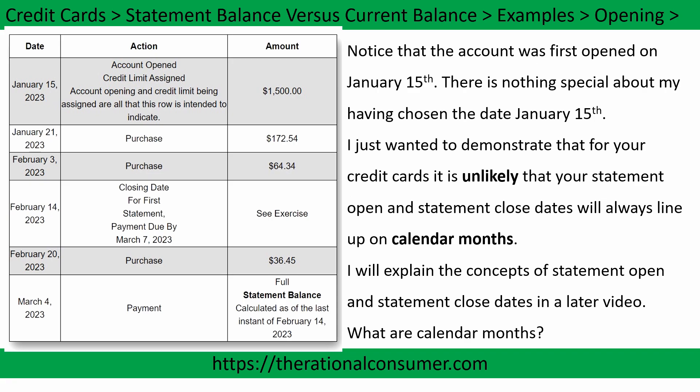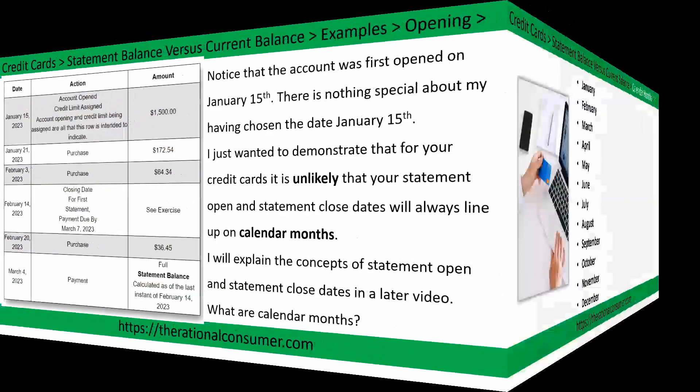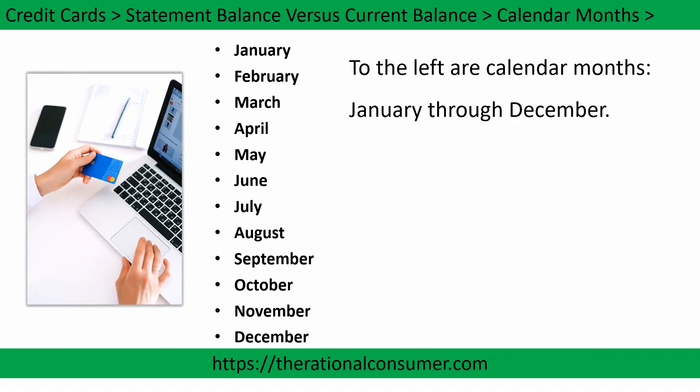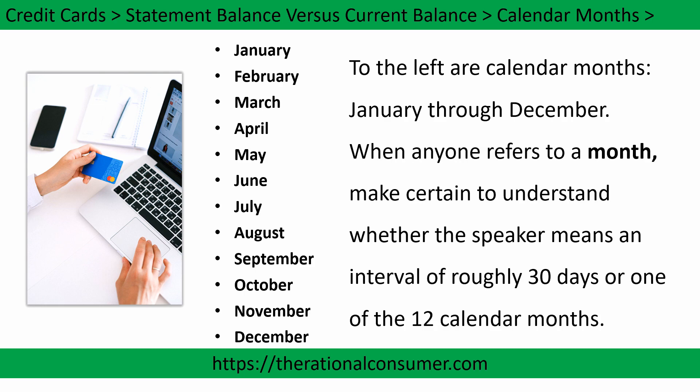What are calendar months? To the left are calendar months, January through December. When anyone refers to a month, make certain to understand whether the speaker means an interval of roughly 30 days or one of the 12 calendar months.